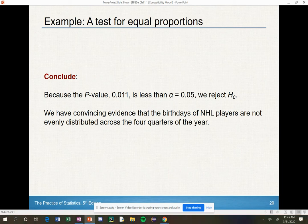We do have convincing evidence that the people that are most successful at the highest level were born in the earlier months. So that is the conclusion of the first section, but we have some more examples to go over.